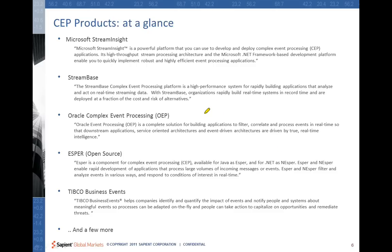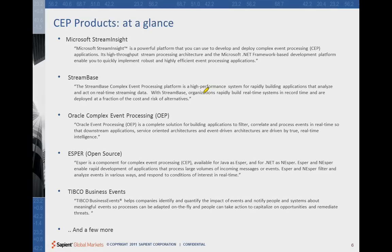I wanted to list these products to show that something is common across them. You can see terms like 'powerful and high throughput,' 'high performance,' 'real-time streaming,' and from Oracle: 'filter, correlate and process.' In Nesper: 'filter, analyze events in various ways, real-time.' And then 'opportunities and remedied threats.' So this is a classic summary of what a CEP is for. CEP products are for high-volume, low-latency, real-time or near-real-time stream processing with pattern matching, which results in identifying opportunities or threats.